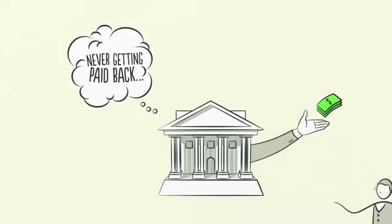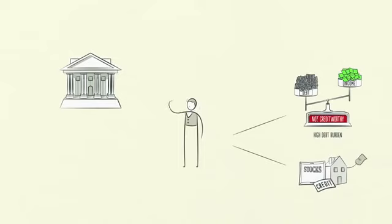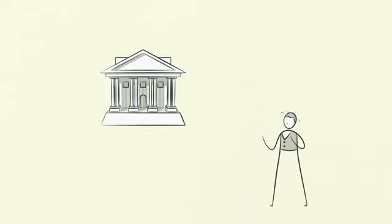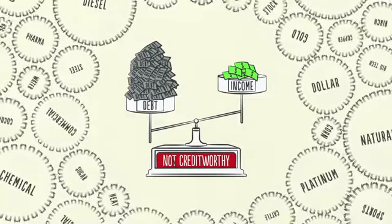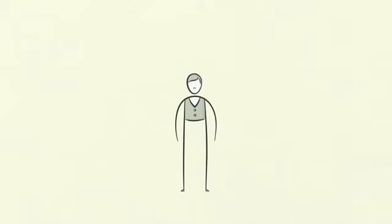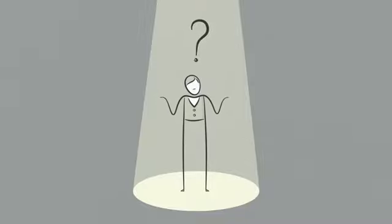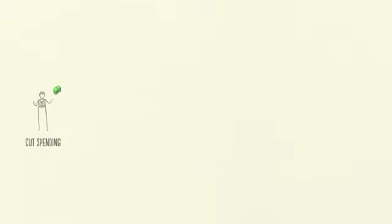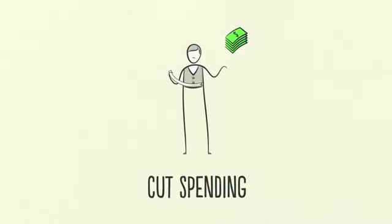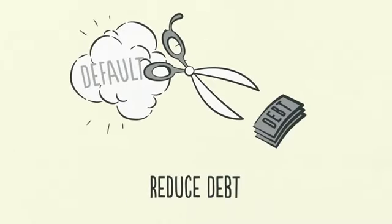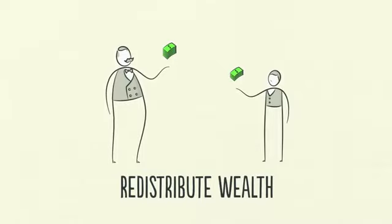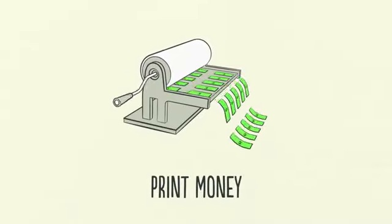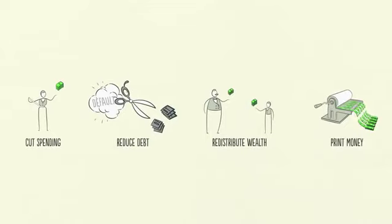Lenders realize that debts have become too large to ever be fully paid back. Borrowers have lost their ability to repay and their collateral has lost value. They feel crippled by the debt — they don't even want more. Lenders stop lending. Borrowers stop borrowing. Think of the economy as being not creditworthy, just like an individual. So what do you do about a deleveraging? The problem is debt burdens are too high and they must come down. There are four ways this can happen: one, people, businesses, and governments cut their spending; two, debts are reduced through defaults and restructurings; three, wealth is redistributed from the haves to the have-nots; and four, the central bank prints new money. These four ways have happened in every deleveraging in modern history.